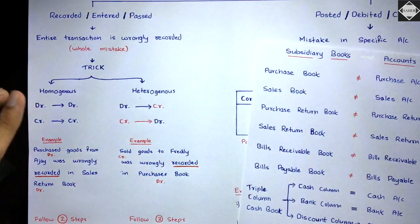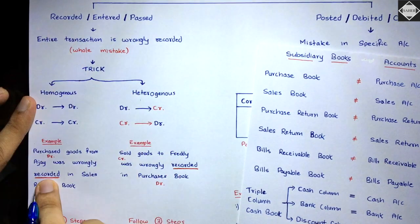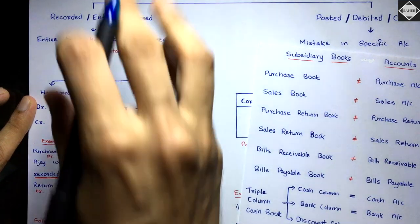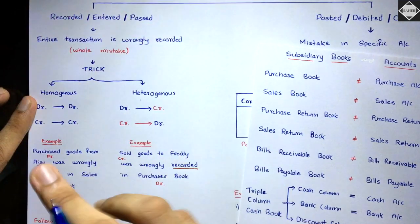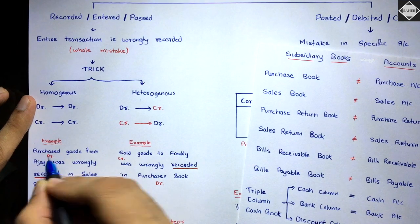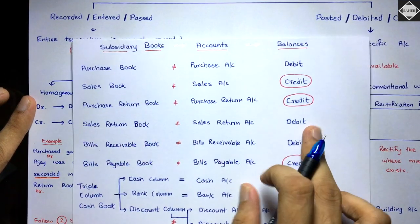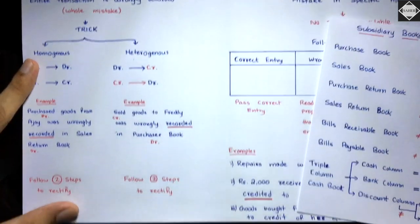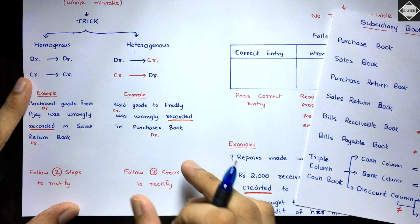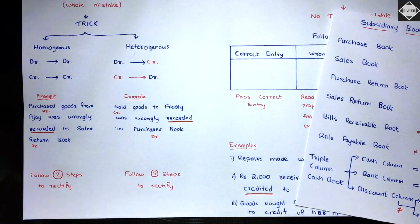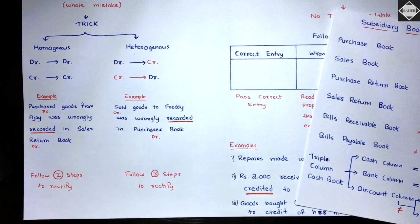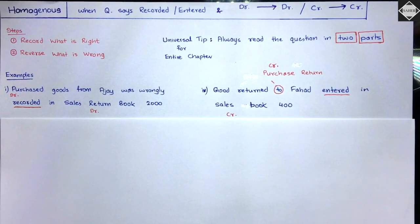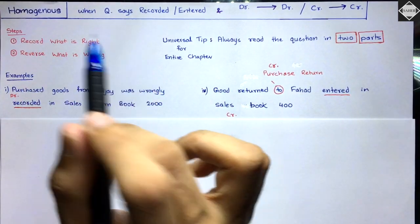How to identify in your mind: when you see a transaction with the keyword 'recorded', it's the first category. Then check — 'sold' means sales has credit balance; 'purchases' has debit balance — credit has gone into debit, so it's heterogeneous. For homogeneous identification: keyword is 'recorded' and then check balances — purchase (debit balance) and sales return (debit balance) — debit has gone into debit, so homogeneous. Always check the balance type of both accounts involved.